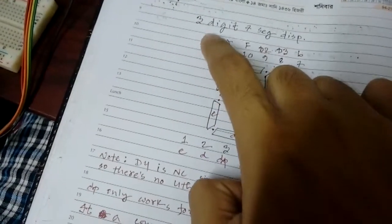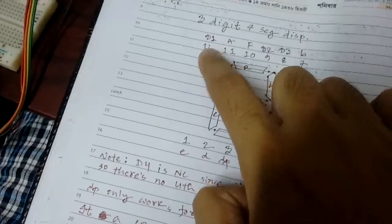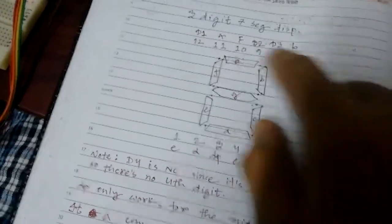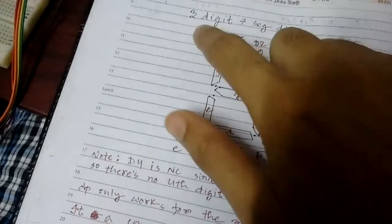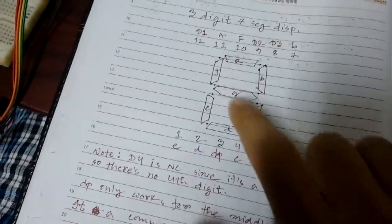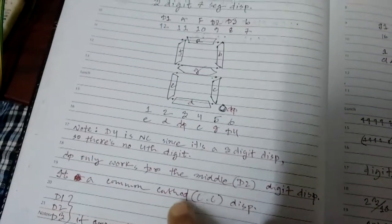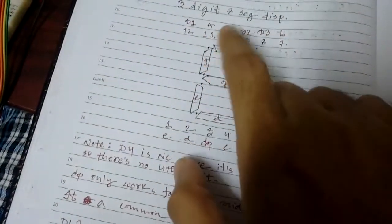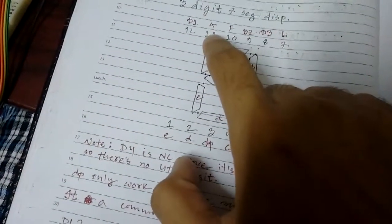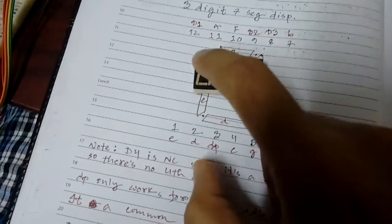Now this type of display is common cathode. So if I provide the D1 pin 12 here - as you can see, one through six and then seven through twelve - and if I power this on, I need to provide ground here since this is common cathode.